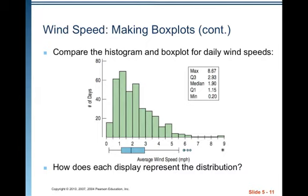Compare the histogram and box plot for daily wind speeds. How does each display represent the distribution? Looking at the histogram, it's a little easier to tell what the shape is. You can look at it and see it's skewed right. You've got a mode there between 1 and 1.5. That kind of information is easier to see from your histogram.